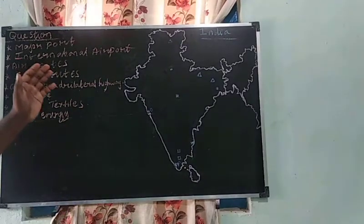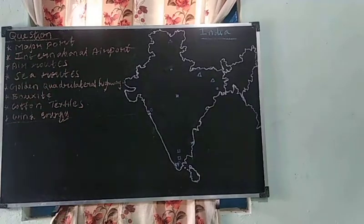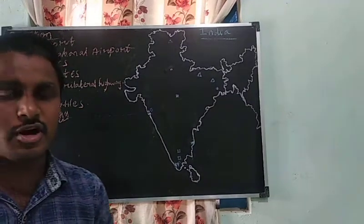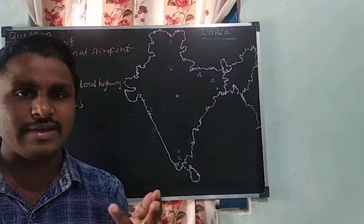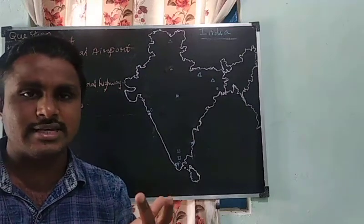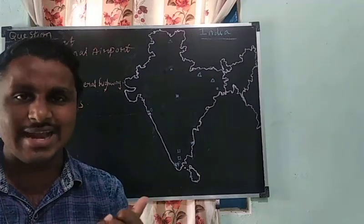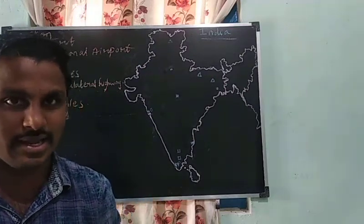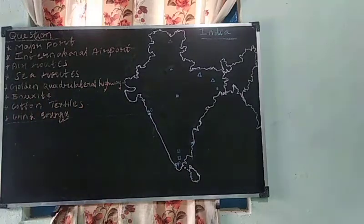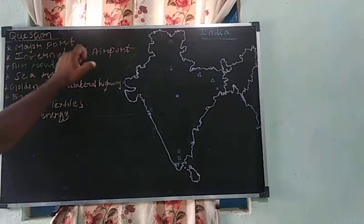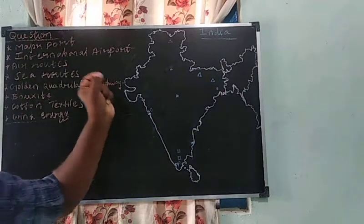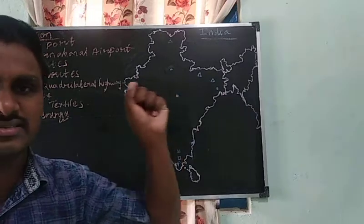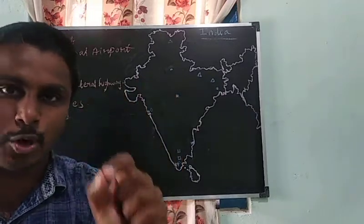First one is major ports. Four important transport ways are airway, waterway, roadway, and railway. The waterway-based transport facility is called a port.